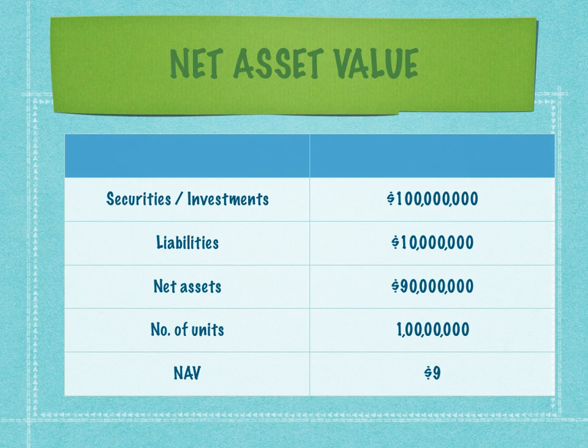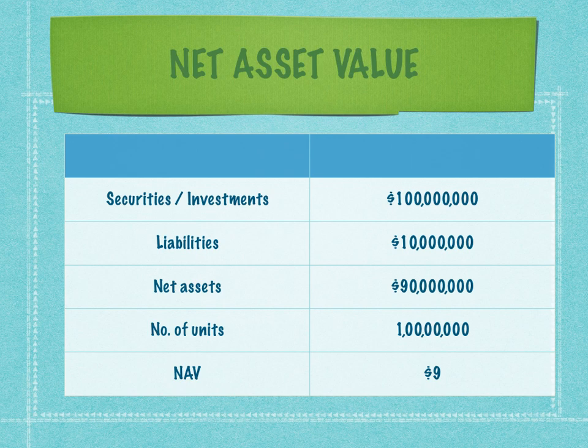Let's take a look at a very simplistic calculation of NAV. Let's say the hedge fund has made investments worth 100 million dollars and has liabilities worth 10 million dollars. The net assets is 100M minus 10M, which gives us 90 million dollars. The number of units is 10 million units. Therefore, the NAV is 90 million divided by 10 million, which equals 9 dollars.